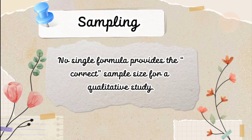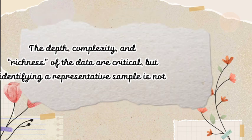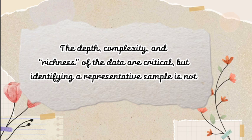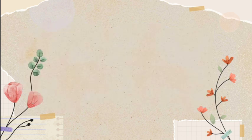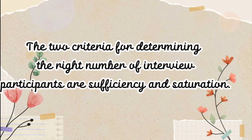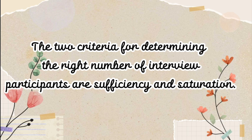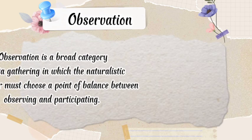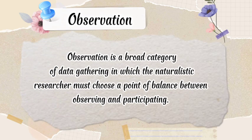Instead, the researcher engages in reiterative, cyclic movement between data gathering and data analysis. Sampling: no single formula provides the correct sample size for a qualitative study. The depth, complexity, and richness of the data are critical, but identifying a representative sample is not a consideration since the purpose is to understand, not to generalize.